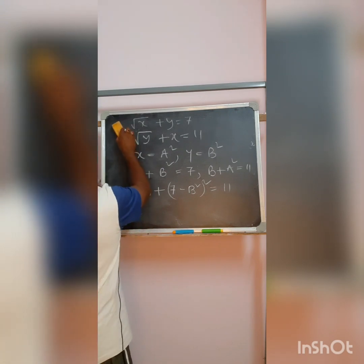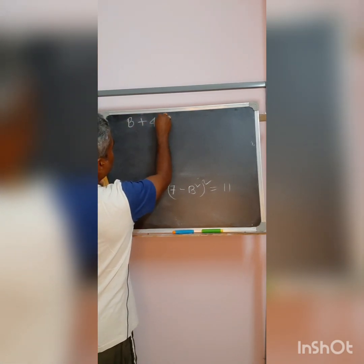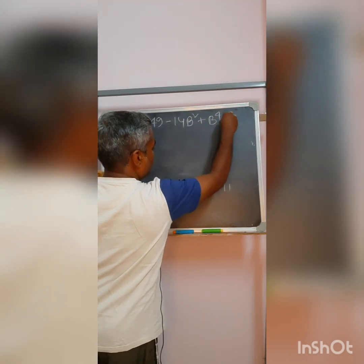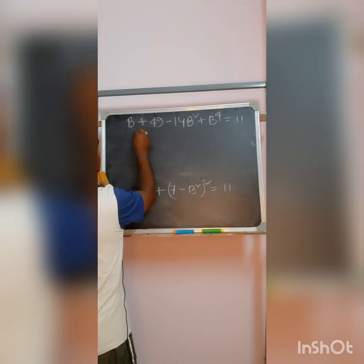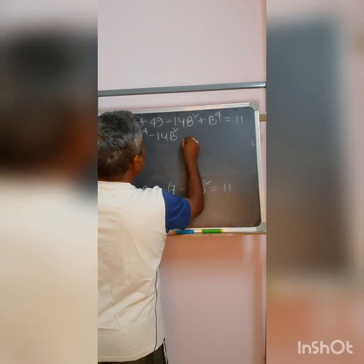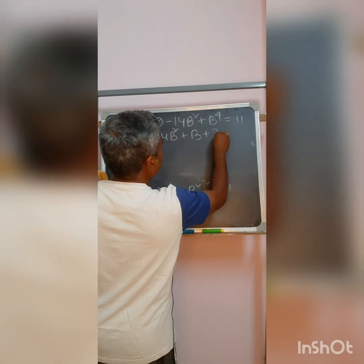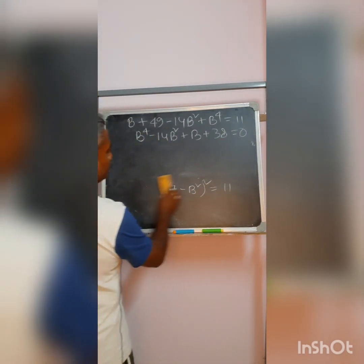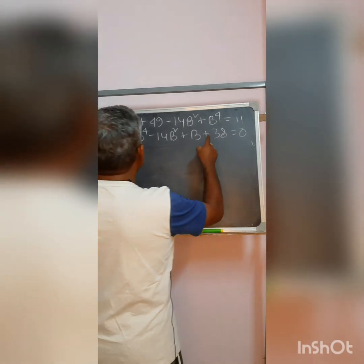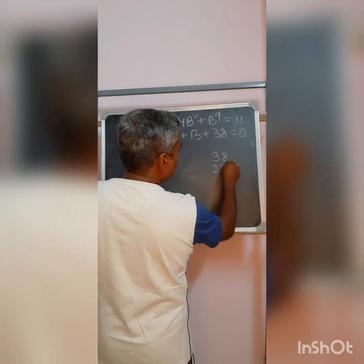Now substituting the value of a from the first equation into the second: b plus (7 minus b squared) squared equals 11. Expanding gives b plus 49 minus 14b squared plus b to the power 4 equals 11. Taking everything to one side: b⁴ minus 14b² plus b plus 38 equals 0. Now comes the tricky part — how to factorize this. The clue is that 38 can only be factorized as 19 times 2.